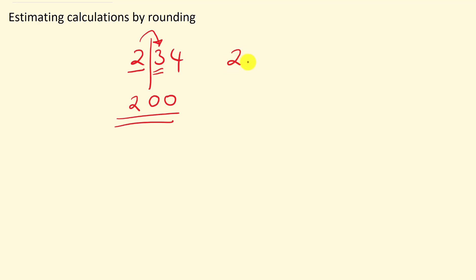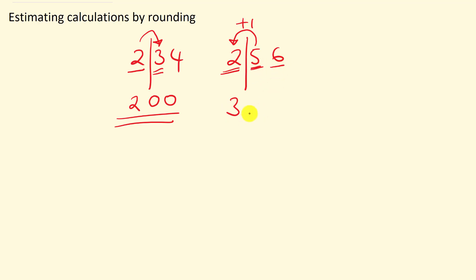Let's look at an example where we actually round up. We have 256. The first significant figure is 2. Look at the number after the line — it is 5 or over, so we add 1 to our first digit. 2 add 1 is 3, and the next two digits become zeros. So 256 rounded to one significant figure is 300.